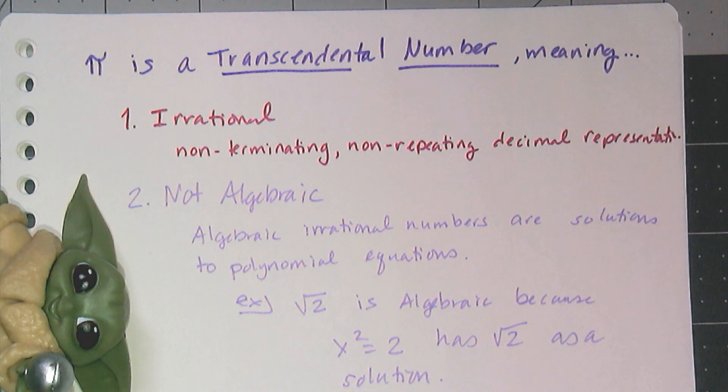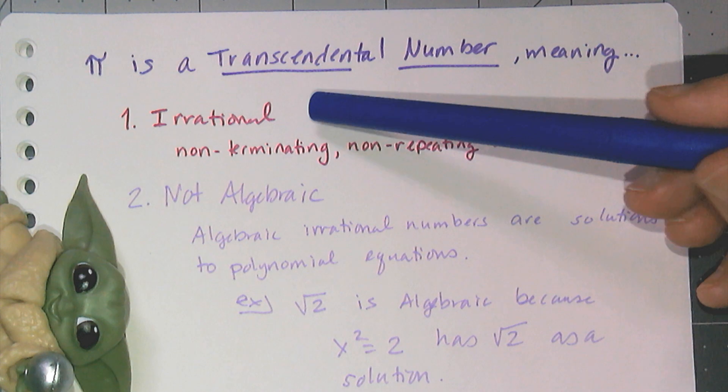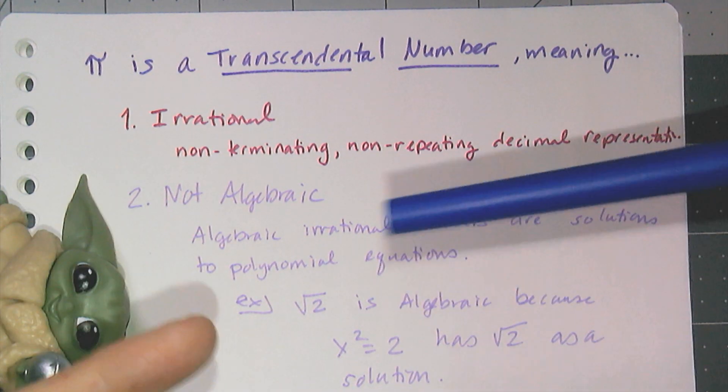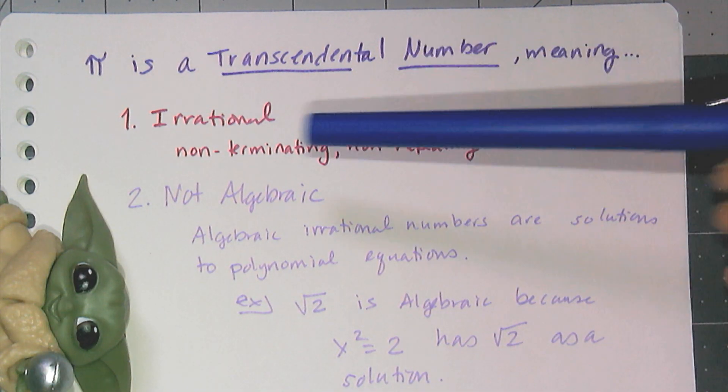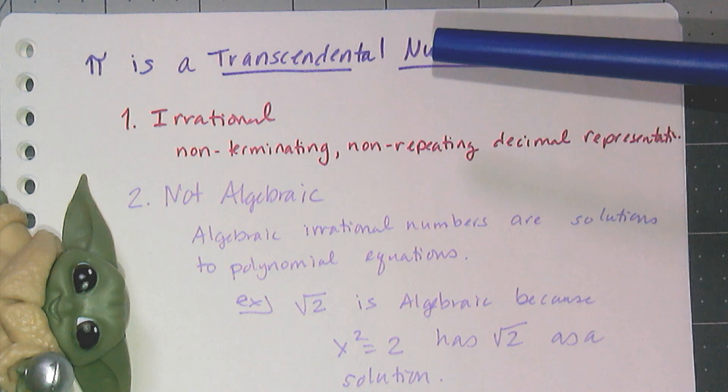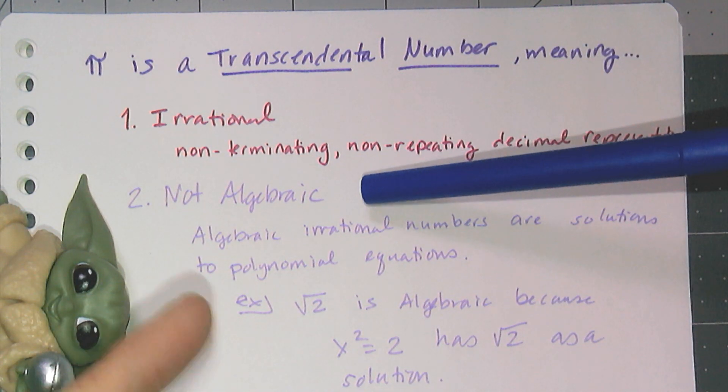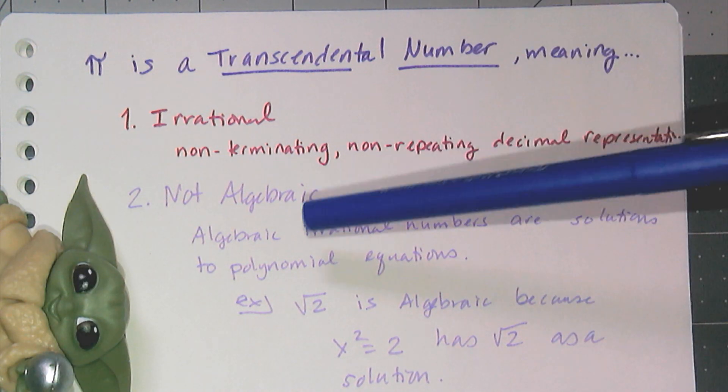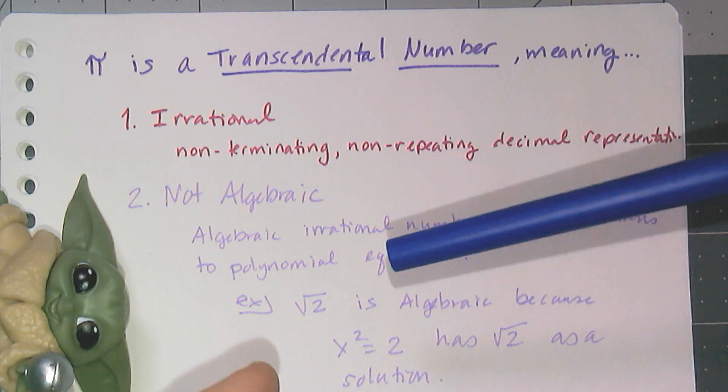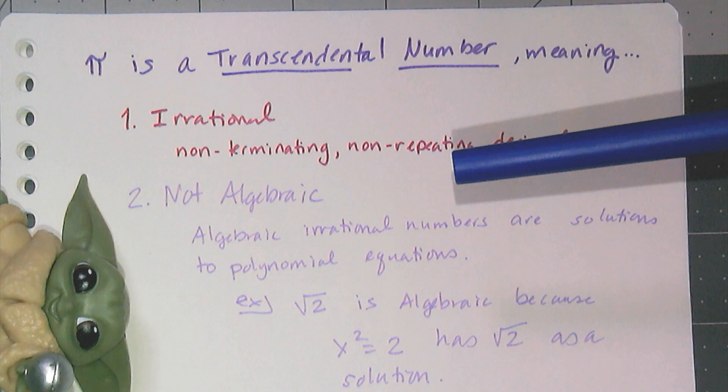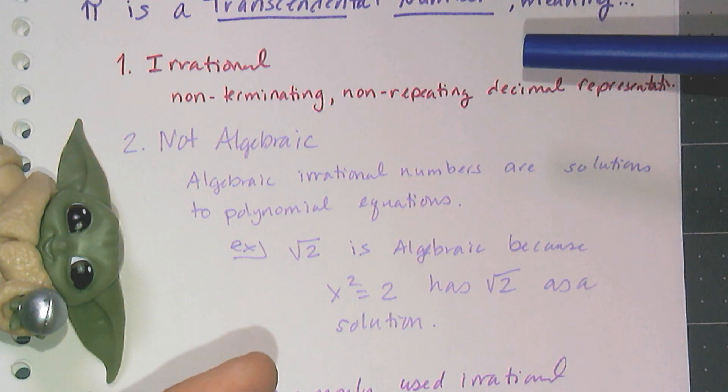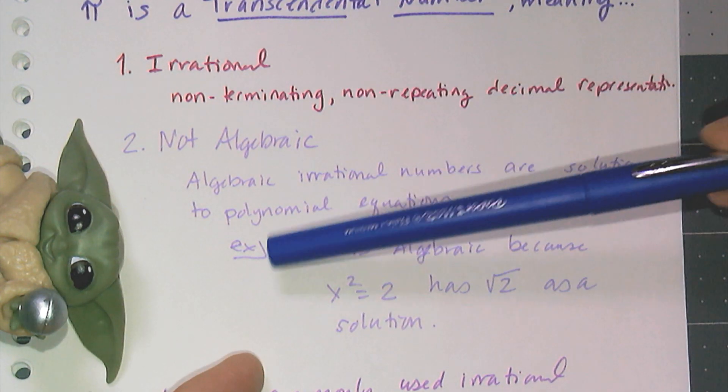Pi itself is considered a transcendental number, which is one of the things that makes it fancy and fun. A transcendental number is an irrational number. An irrational number is a number whose decimal representation never ends and never repeats—so it's a non-terminating, non-repeating decimal. Transcendental numbers are not algebraic, meaning pi is not considered an algebraic number.